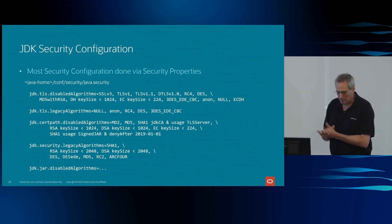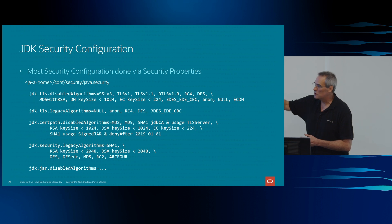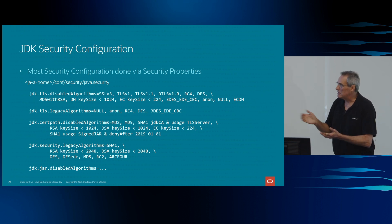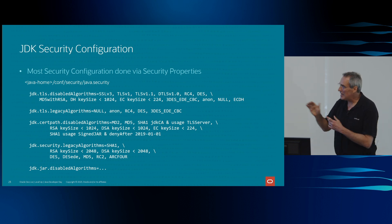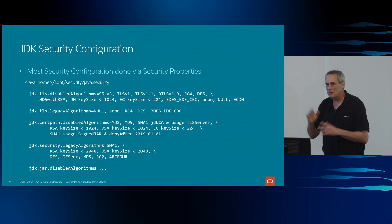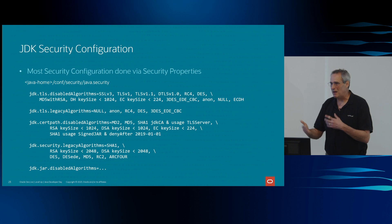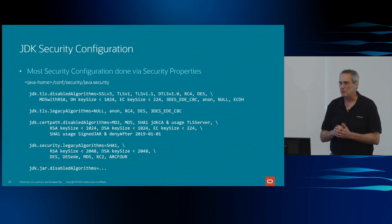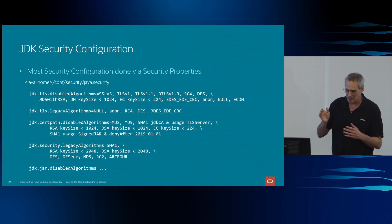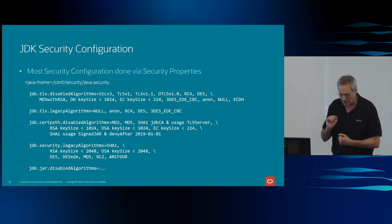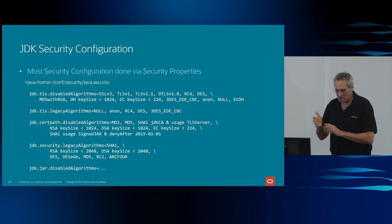There are two different types of properties: disabled and legacy. Disabled algorithms mean that if on the list, you cannot use them for TLS, CertPath, or JAR signing. Legacy algorithms are a last resort — we will still allow you to use them, but you really want to think about updating. Because in the next version of the JDK, we may put those on the disabled list. For example, CertPath RSA keys less than 1024 bits are disabled. Those with keys between 1024 and 2048 bits are considered legacy — still usable but not as secure.